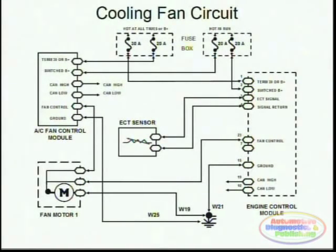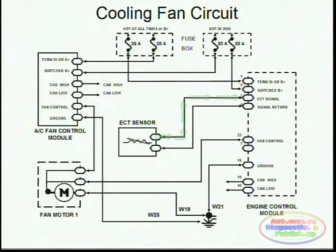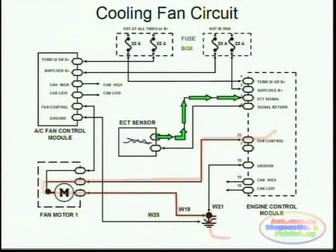The ECM makes a determination on the actual speed and control of the motor and transmits this output to the AC fan control module. This fan can be controlled by two different units: the engine control module and the fan control module. The ECT sends a temperature signal to the ECM, and here in red we can see the actual current path to turn on the motor.